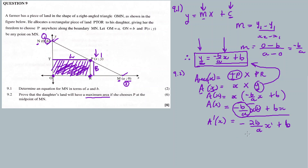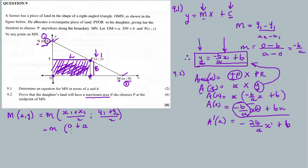Before finding the maximum area, let's also calculate the midpoint of the straight line. The midpoint formula is: ((x₁ + x₂)/2, (y₁ + y₂)/2). With x₁ = 0, x₂ = A, y₁ = B, y₂ = 0, we get midpoint = (A/2, B/2).